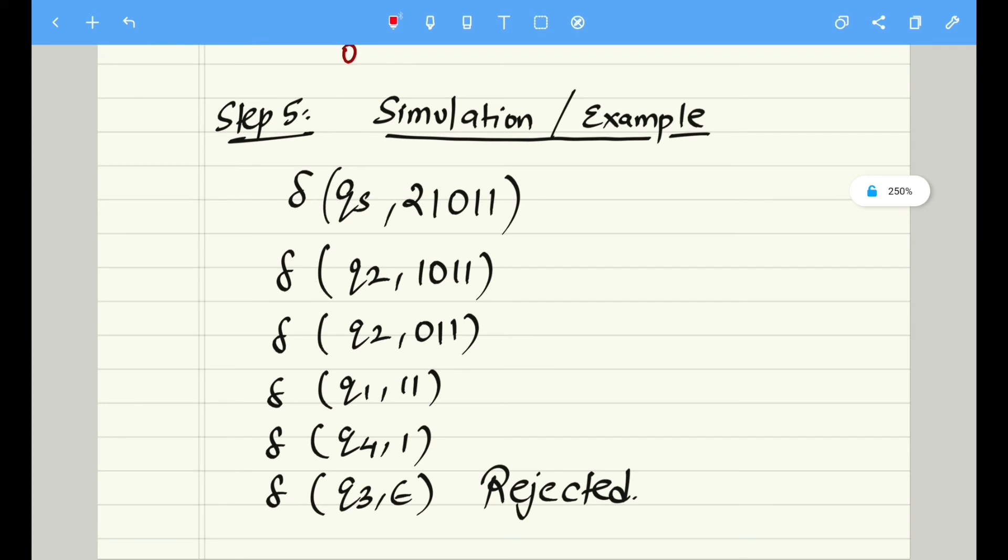Step number five is nothing but simulation. I have taken only a single example just for time constraints. This is a number 21011 which, if I am dividing by 5, ultimately step by step we will reach this particular state Q3 after reading all the inputs. It simply means the final condition, the final step which we have reached is state Q3, and all the inputs have been read.